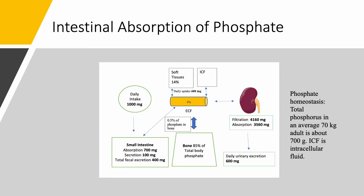Looking at this diagram: if we assume a daily intake of phosphate of 1,000 milligrams — it can vary between 700 and 2,000 — the small intestine absorbs 700 milligrams, but 100 milligrams goes back into intestinal secretions. Therefore we have a net absorption of 600 milligrams, and 400 milligrams is excreted in the stools. So the daily net absorption of phosphate is 600 milligrams.